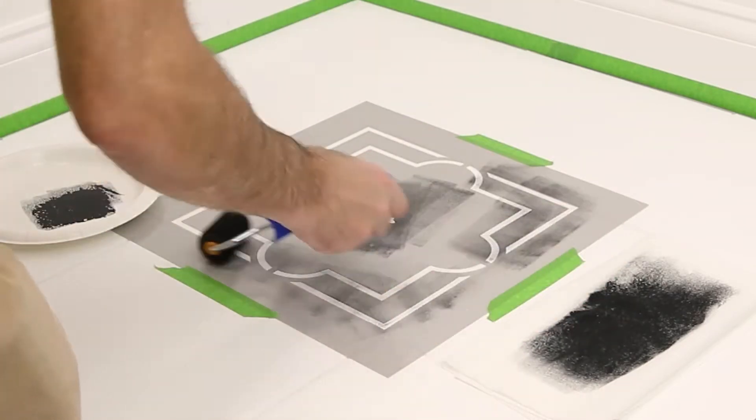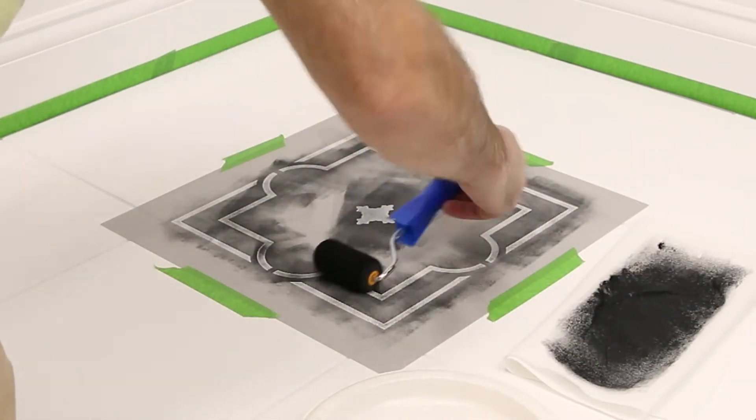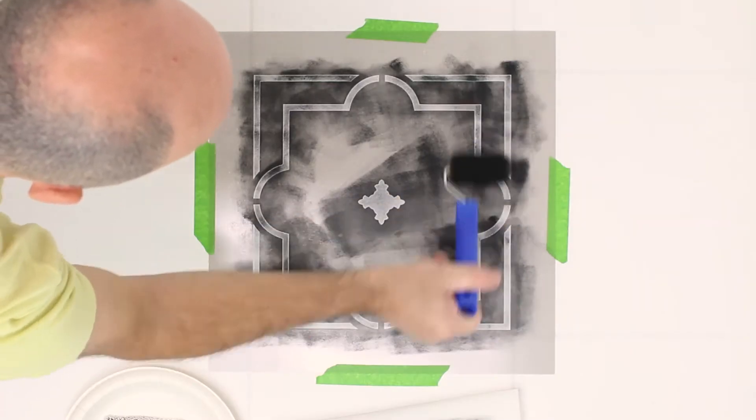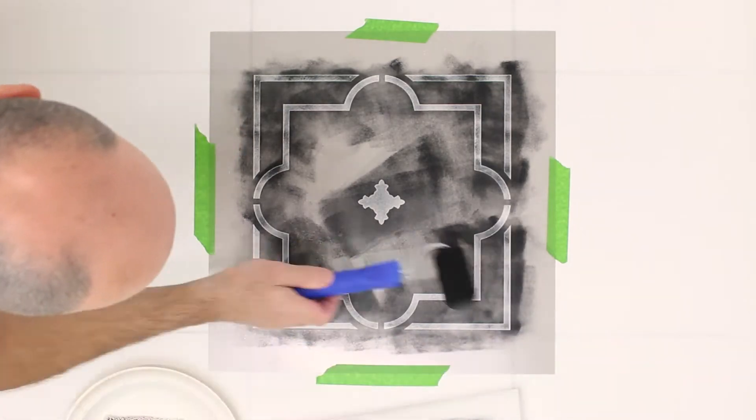Apply the paint through the stencil using numerous light coats. Rolling the brush in one direction only will help reduce blotchiness.